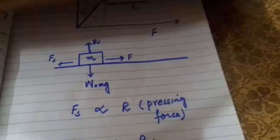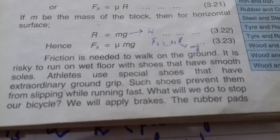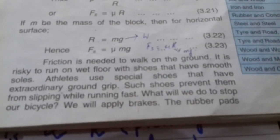Now look at the book, page 73. You can see the derivation showing that friction is needed to walk on the ground. Friction is desirable in many cases.